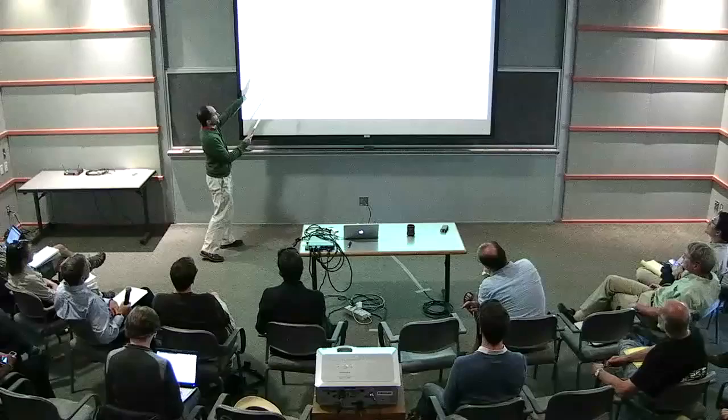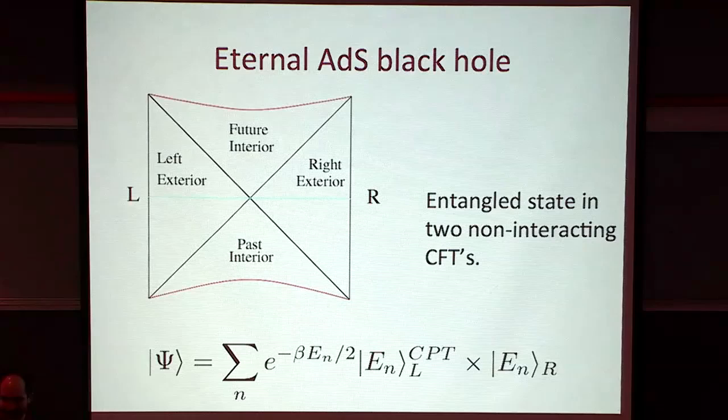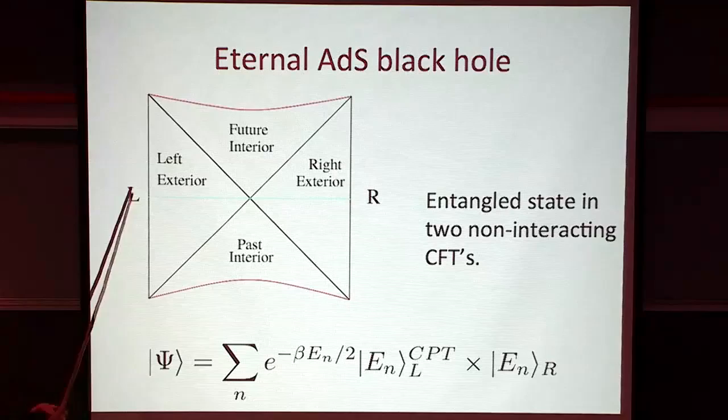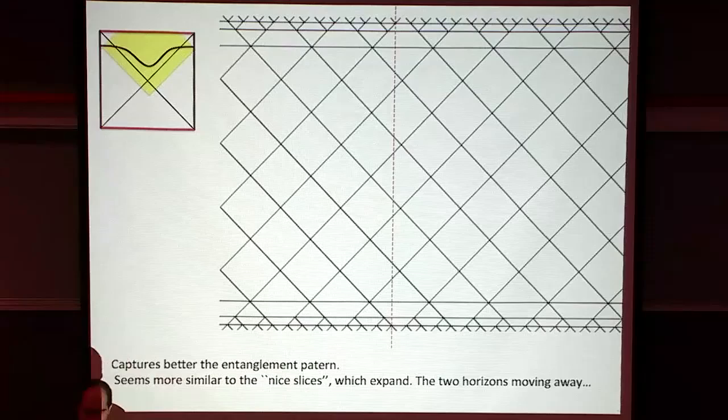For a concrete situation: you can consider an eternal black hole with an infinite spatial direction. Divide the two systems into what's in front of the screen and what's behind. The Ryu-Takayanagi surface will go from one side to the other, crossing the horizon. Then you evolve, and you have these surfaces. This surface is one of those Ryu-Takayanagi surfaces cutting the system into two parts.